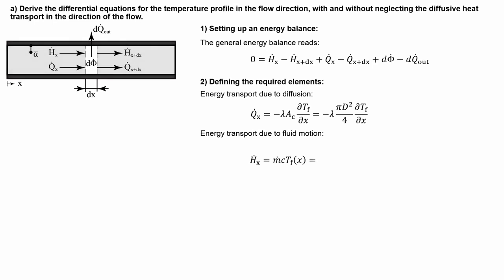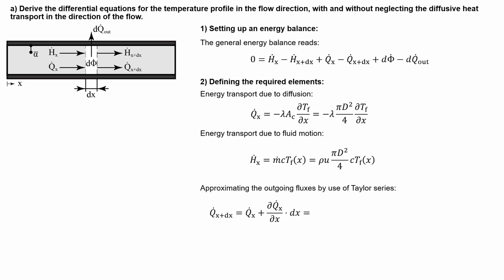However, the mass flow is not given, but we can express it as the product of the fluid density, the average fluid velocity, and the area normal to the direction of the flow. Similarly, we have to find expressions for the terms describing the energy loss due to diffusion and fluid motion. Since we are dealing with an infinitesimal element, the temperature profile can be approximated to be linear within this region, and therefore we can use the Taylor series expansion to approximate these terms.